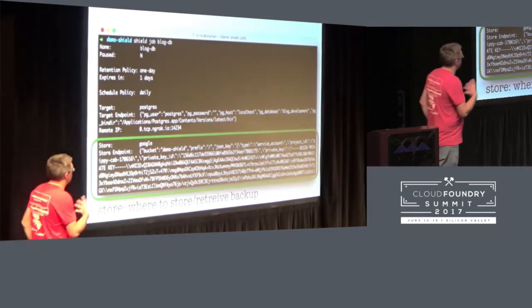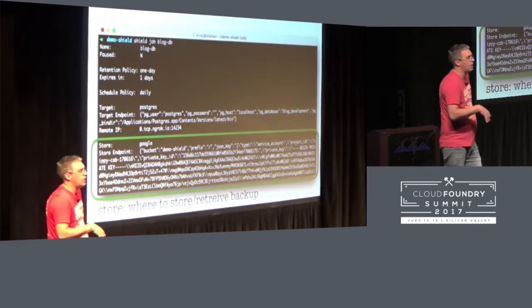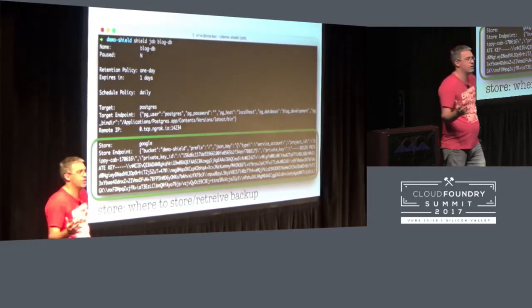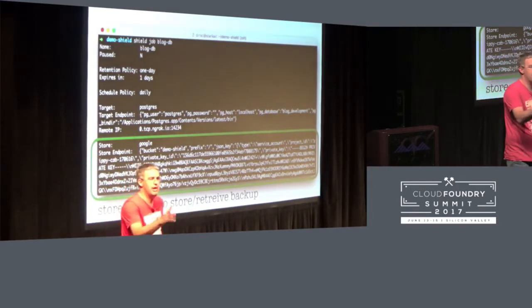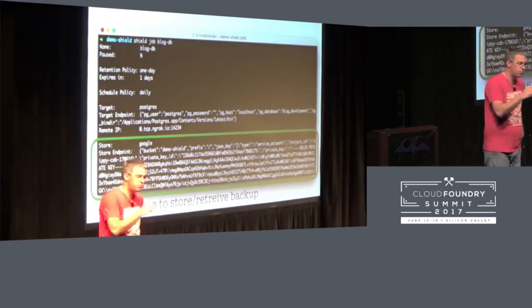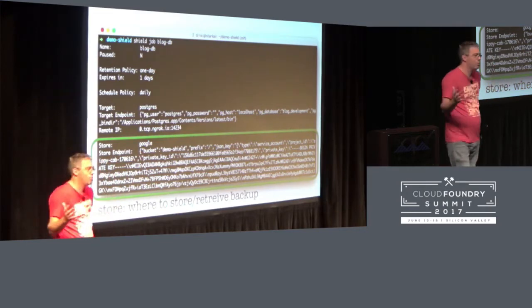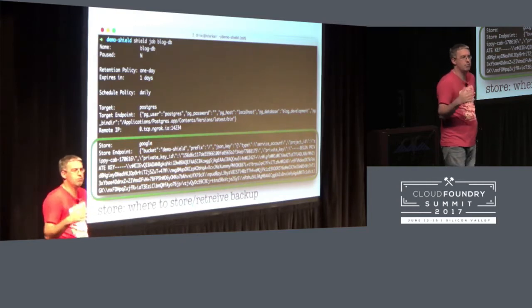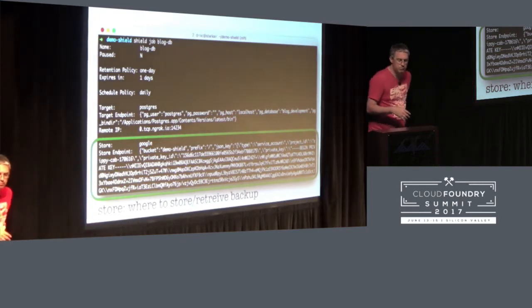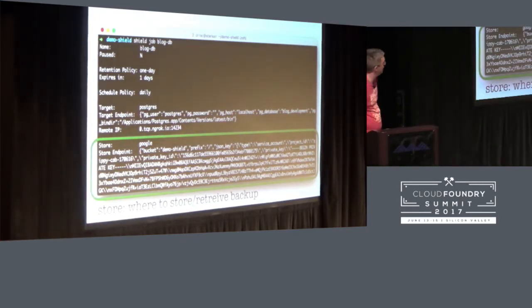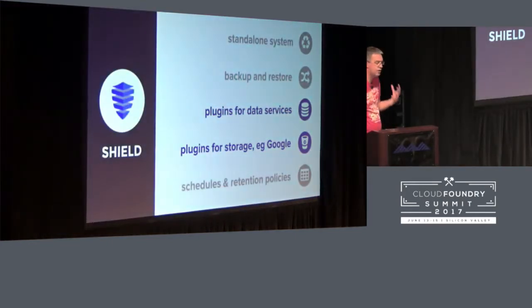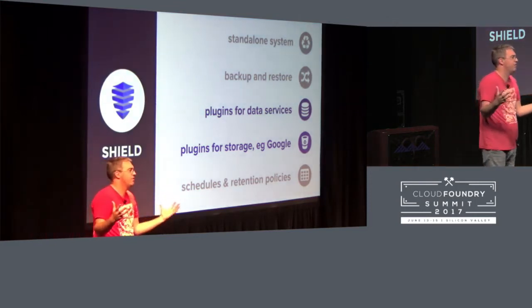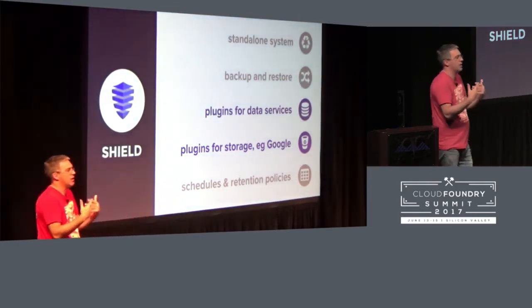The job also describes where we're going to back up to. You might have lots of targets — BOSH's database, Cloud Foundry's database, all the service instances — but only one store: one bucket where all backups go. If you have policy reasons, you might need more. The reason this can work for an arbitrary set of data sources and stores is the notion of plugins.